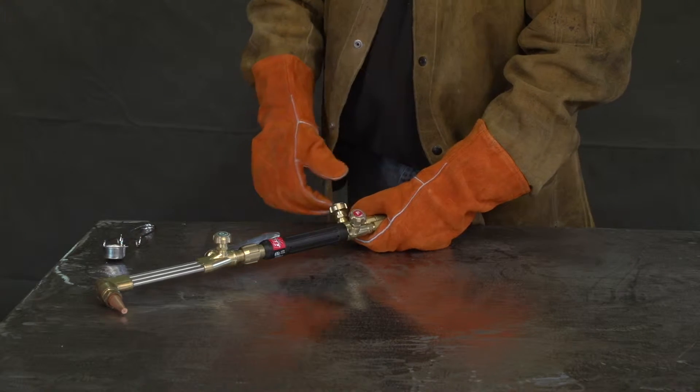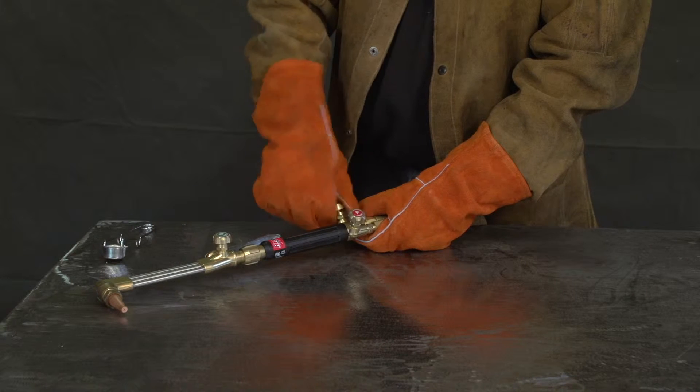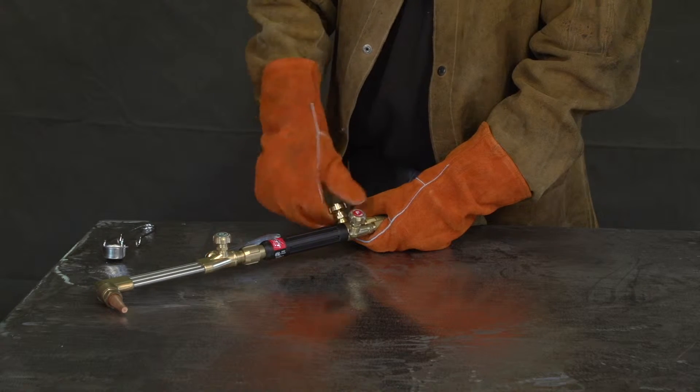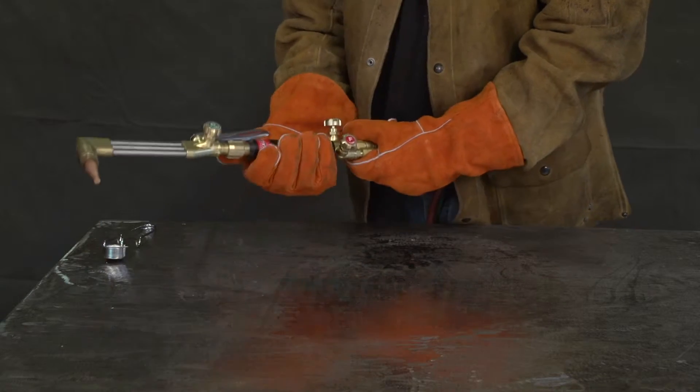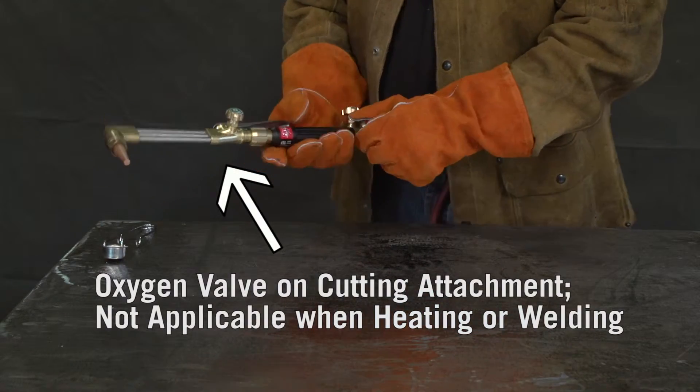When using a combination torch with a cutting attachment, open the oxygen valve on the torch handle all the way. This ensures maximum flow to the cutting oxygen lever.